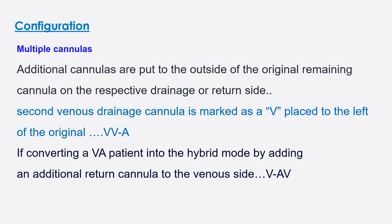The first part of configuration covers multiple cannulas. Additional cannulas are added to the outside of the original cannulas on the respective drainage or return side. For example, in VA ECMO, if we need to add a second venous cannula, it is marked as V and placed to the left, making it VV-A. If we want to convert a VA patient into hybrid mode, we can add another return cannula to the venous side, resulting in V-AV ECMO.